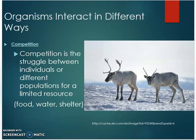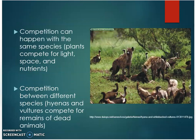Another way organisms interact is through competition. Competition is the struggle between individuals or different populations for a limited resource. Those resources can be anything from food, water, or shelter. Competition can happen within the same species — plants will compete for light, space, and nutrients. Competition can also happen between different species; for example, hyenas and vultures compete for the remains of dead animals.